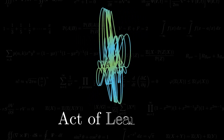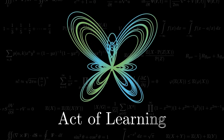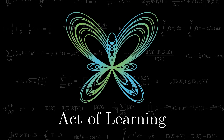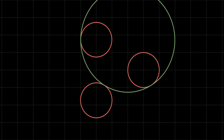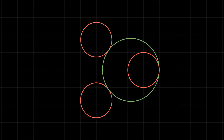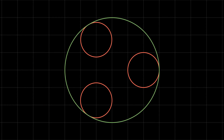Hello everyone, welcome back to Act of Learning. Our discussion in this video will be about one of the classical problems in geometry, known as the Apollonius problem, posed and solved by Apollonius of Perga. The problem asks us to construct circles tangent to three given circles.